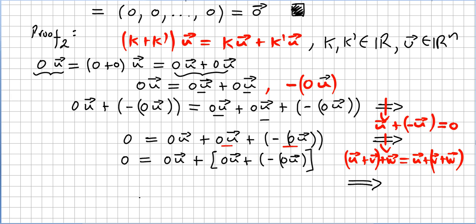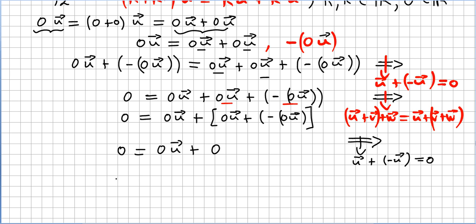For the next implication, I can write 0 equals 0u plus 0, because 0u plus minus 0u gives 0 by the additive inverse property — this is already proved. Then 0u plus 0 is the same as 0u, because we proved before that u plus 0 equals u. So this is another proposition we proved.